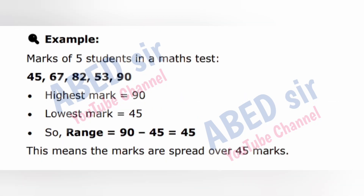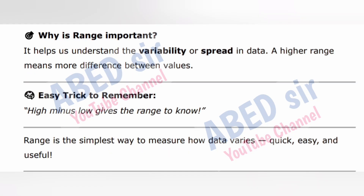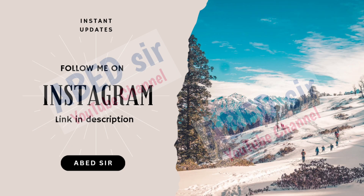Example — marks of 5 students in a maths test: 45, 67, 82, 53, 90. Highest mark = 90, lowest mark = 45. So range = 90 − 45 = 45. This means the marks are spread over 45 marks. Range helps us understand variability or spread in data; a higher range means more difference between values. Easy trick: High minus low gives the range to know.